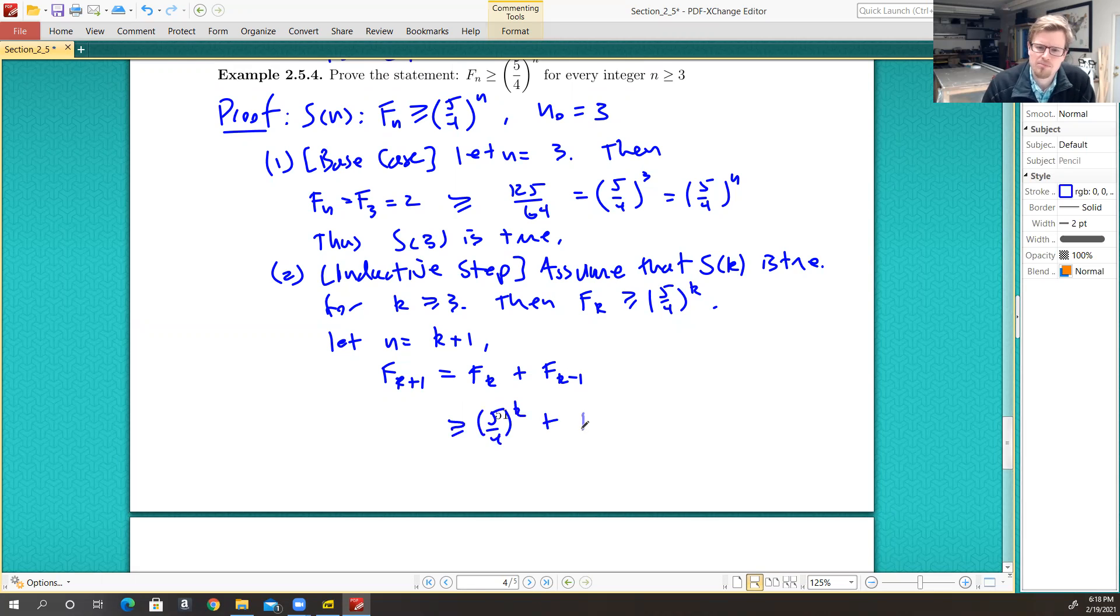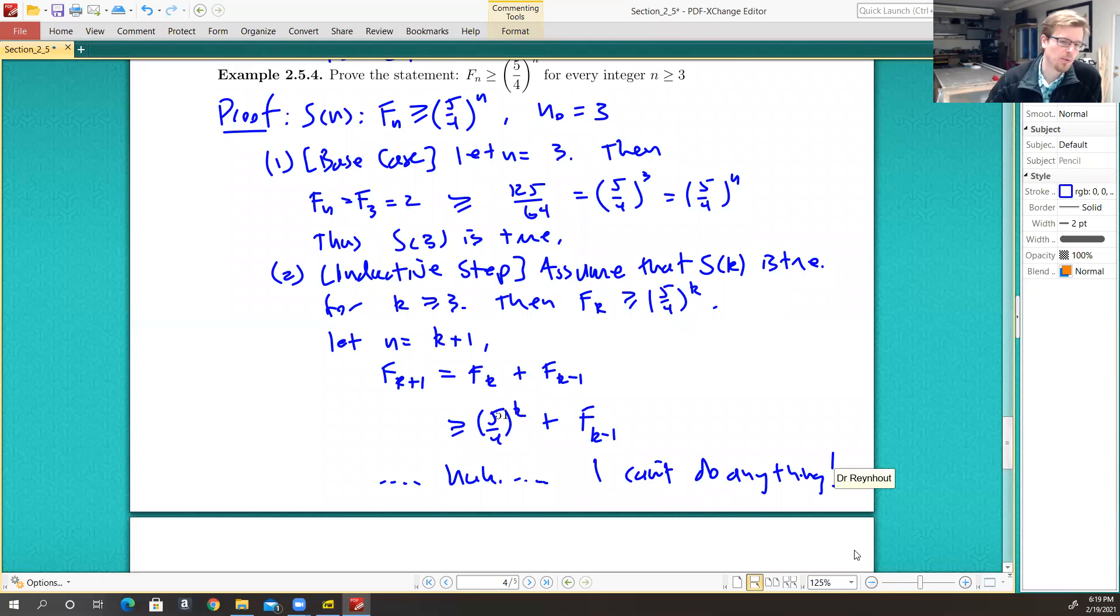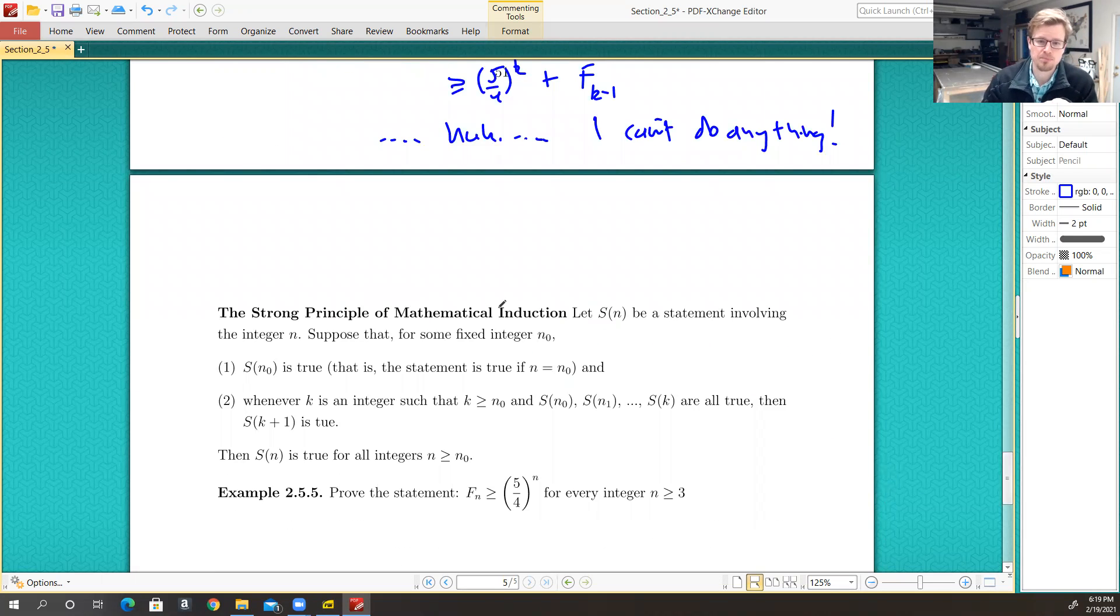Well, I don't actually know anything about F sub k minus 1. I didn't make any assumptions about it. I didn't actually assume here that I'm working with F sub k minus 1 satisfying the statement. So I don't know that it does. I didn't assume it, I don't know it, so I don't have it. I can't do anything. So what we would actually need to do is we would have to know something about F sub k minus 1 in order to prove this, and we can.